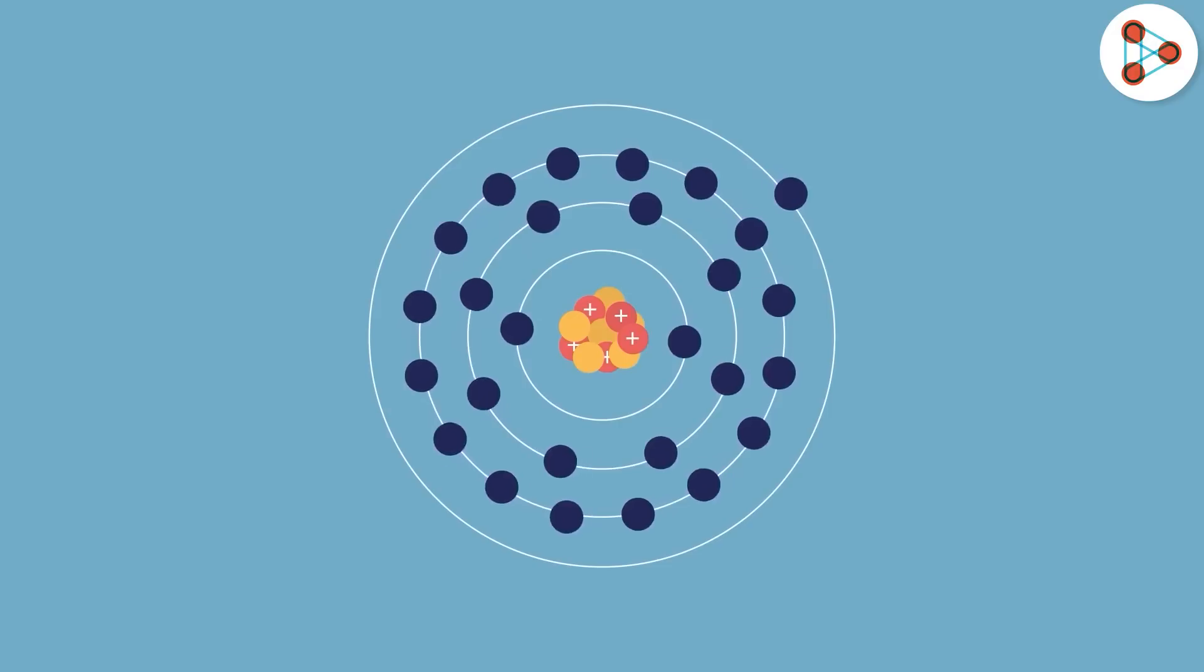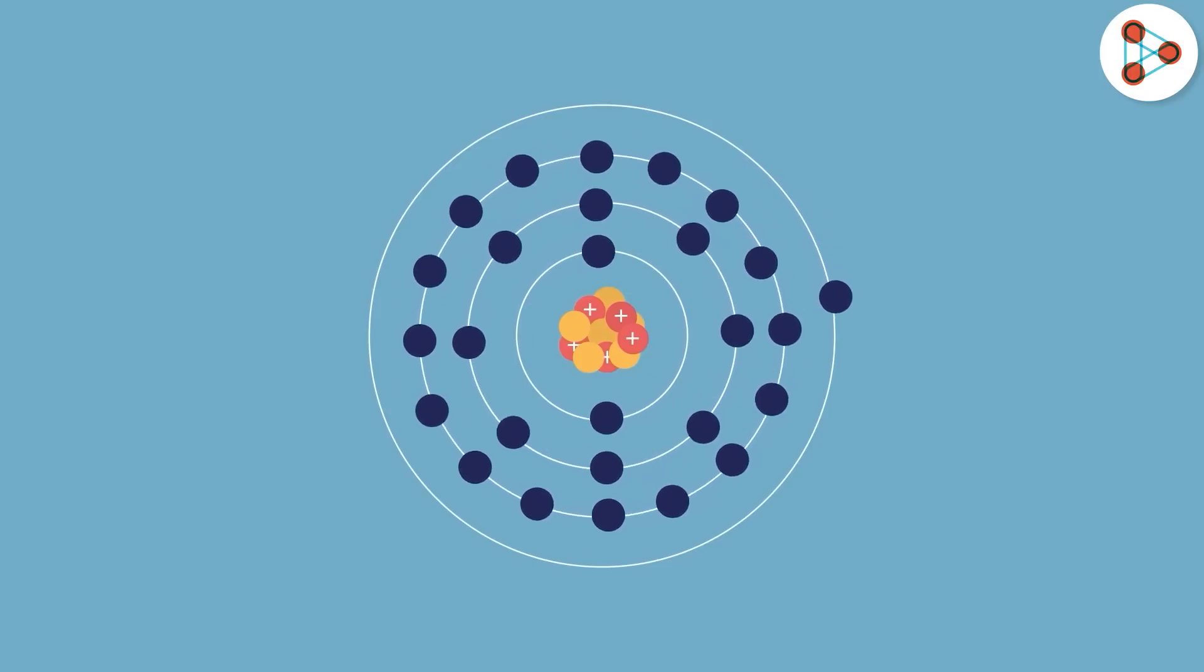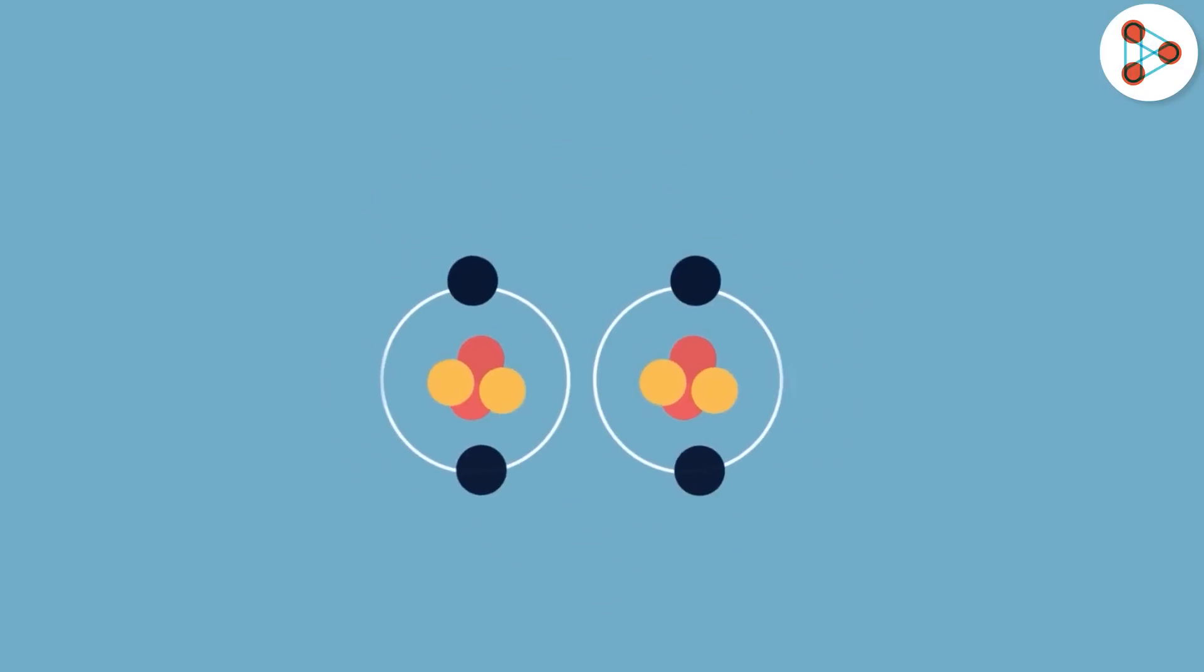But also note that electrons will repel electrons. Now look at this animation. When a negative charge from the left is close to the first atom, it repels the electron in the outermost orbit. Because of the repelling force, the electron may eject the orbit and become a free electron.